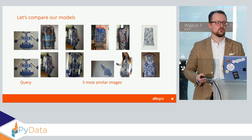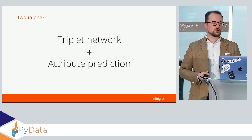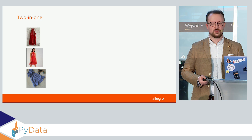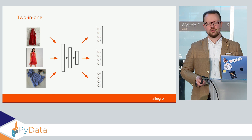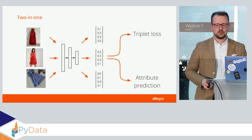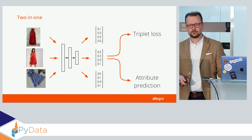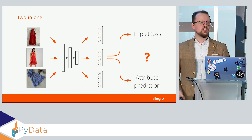The obvious idea is to take this model, which is way better when it comes to color, and combine it with attribute prediction. As mentioned, we can't always use attribute prediction, but when it comes to fashion it's pretty straightforward. So we create a model that combines both: we take our triplet, pass all images through our encoder — still the same ResNet — get embeddings for each image, compute our triplet loss on those, and then add a classification head for multiple attributes.